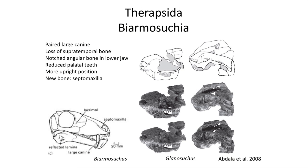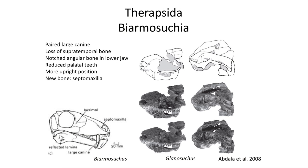The Therapsida also lost the supratemporal bone in the skull, exhibit a notch in the angular bone in the lower jaw, and reduce the number of palatine teeth, with most teeth confined to the maxilla, premaxilla, and dentary. They also have a more upright posture, and the skull features a new bone called the septomaxilla that can be found near the nostril.